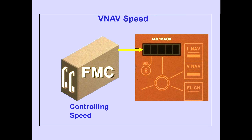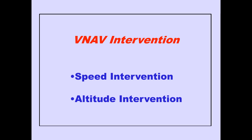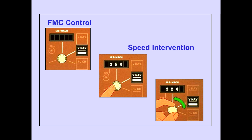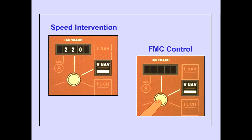When the FMC is controlling speed, the IAS mode window is blank. VNAV intervention includes speed intervention and altitude intervention. To accomplish speed intervention, push the IAS mode selector. This displays the current VNAV target speed. Rotating the IAS mode selector increases or decreases the target speed without disengaging VNAV. Pushing the selector a second time returns speed control to the FMC and the IAS mode window blanks.